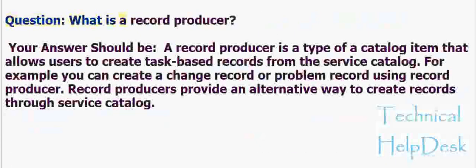Question: What is a record producer? Answer: A record producer is a type of catalog item that allows users to create task-based records from the service catalog. For example, you can create a change record or problem record using a record producer. Record producers provide an alternative way to create records through the service catalog.